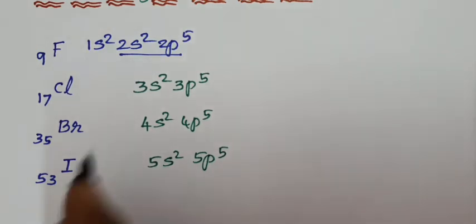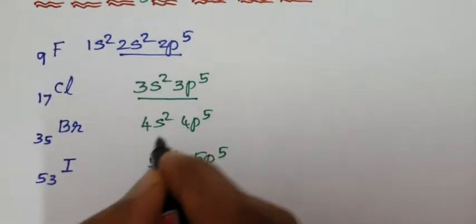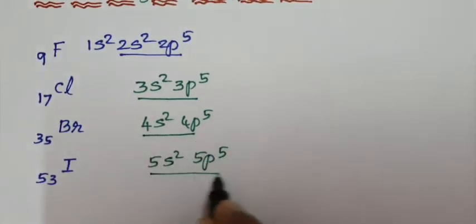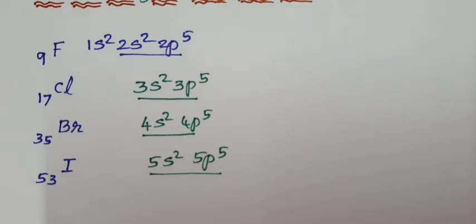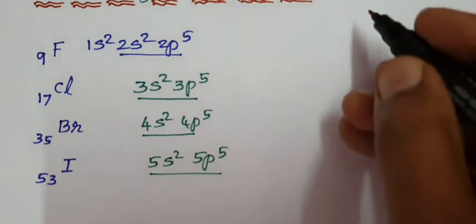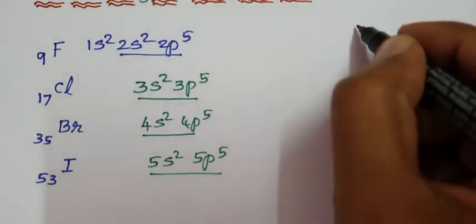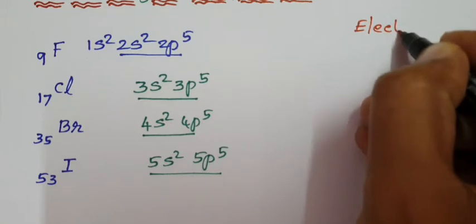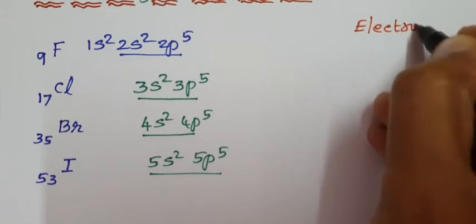There are 7 electrons in the valency shell, in the outermost shell. Remember this. You should also know about the electronegativity of halogens.